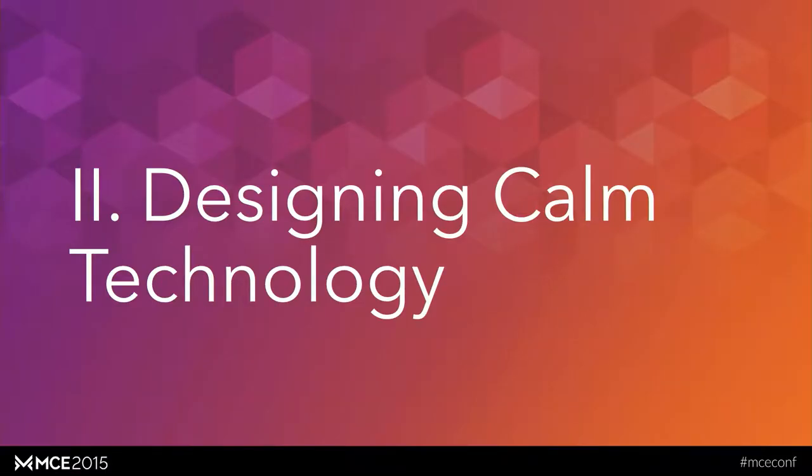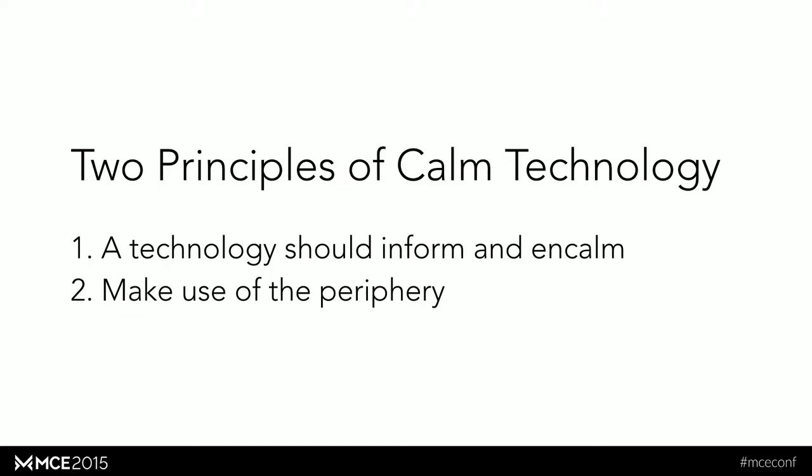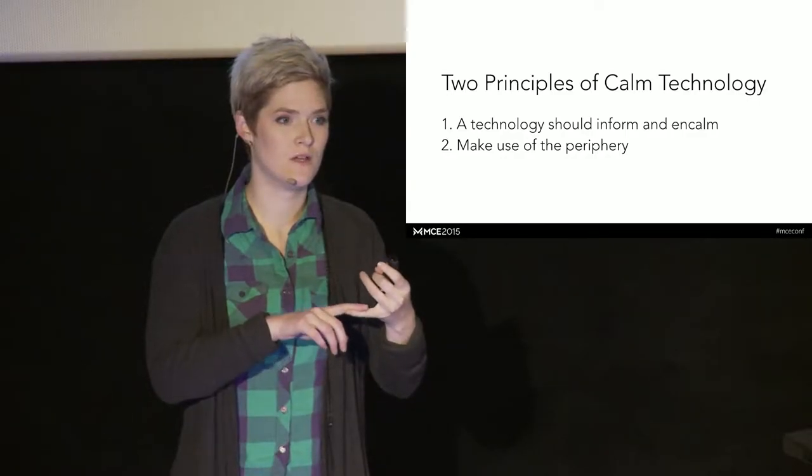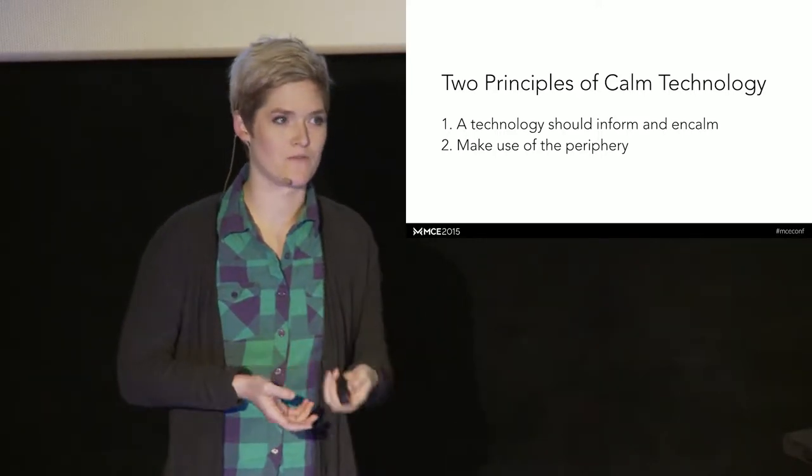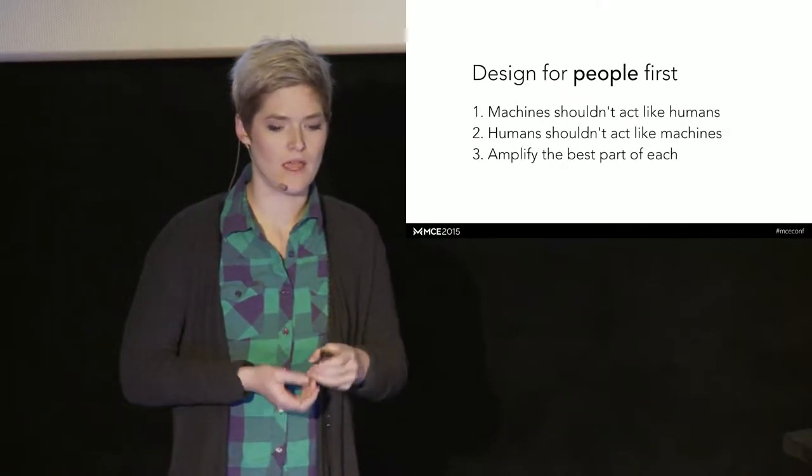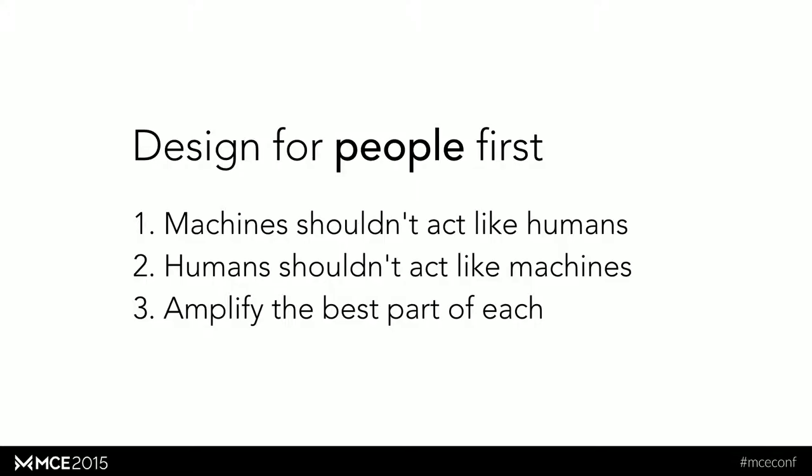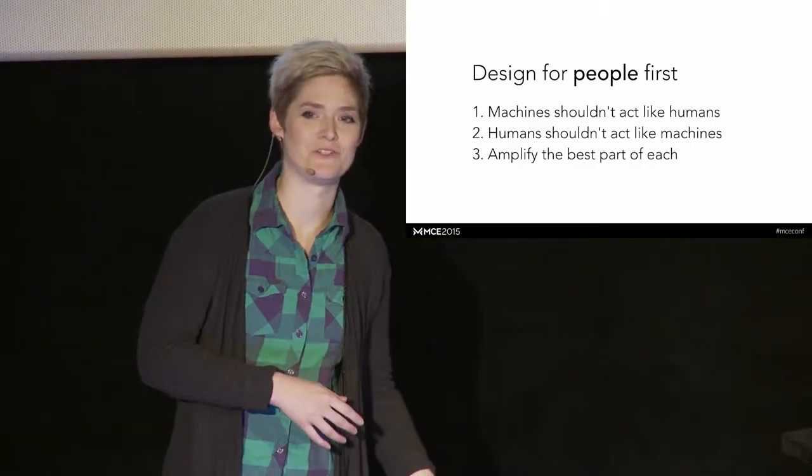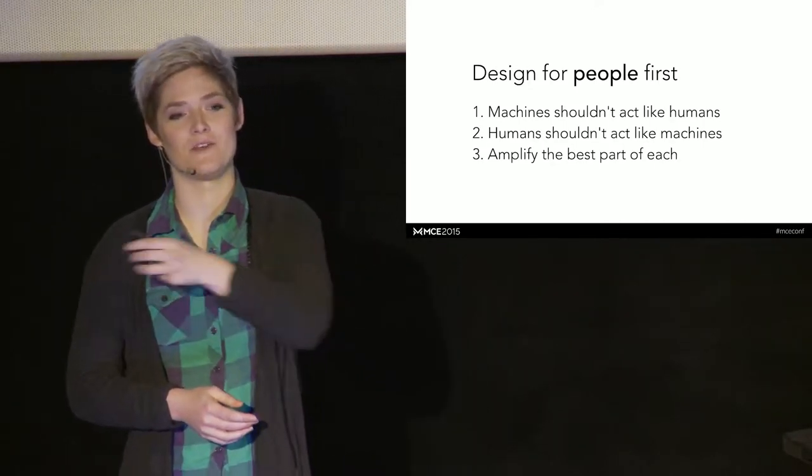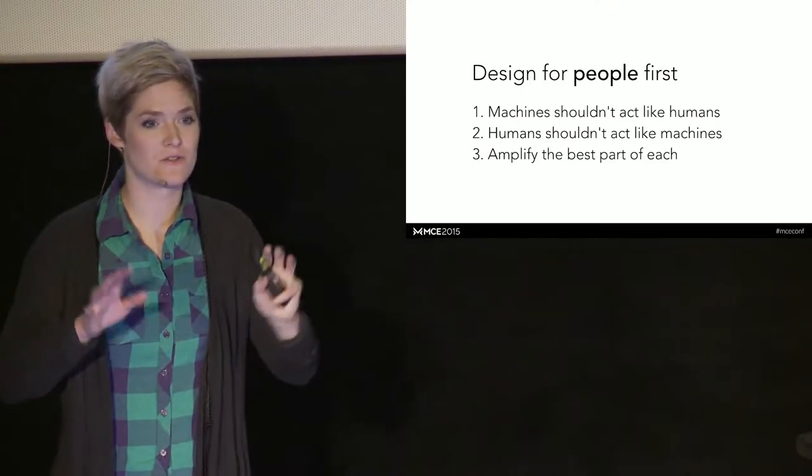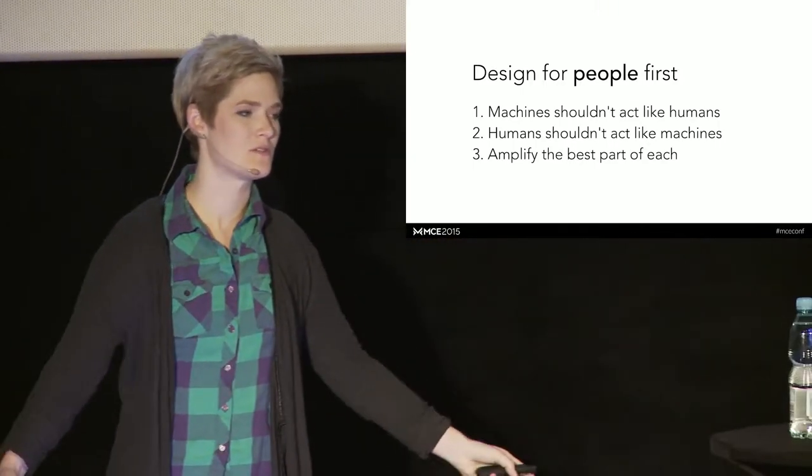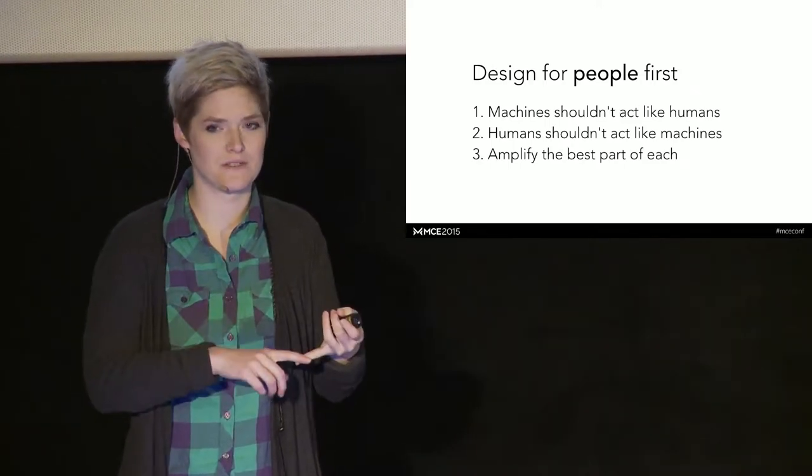So in terms of designing calm technology, there are some principles. Mark Weiser and John C. Lee Brown said that a technology should inform while being calm, while calming, making you feel calmer, and then make use of the periphery, which we talked about. And then designing for people first is really important. People come up to me all the time, and they say, I'm really bad at technology. And I say, no, technology is bad at you. What usually happens is somebody says, usually an executive says, we want this app with all of these different features. And when they do that, the market doesn't understand the features. They can't really learn the system. It's not intuitive. And then they have to support all these different features. And so they can't focus on making an app that's really good.